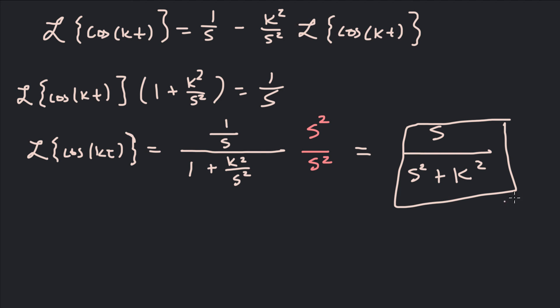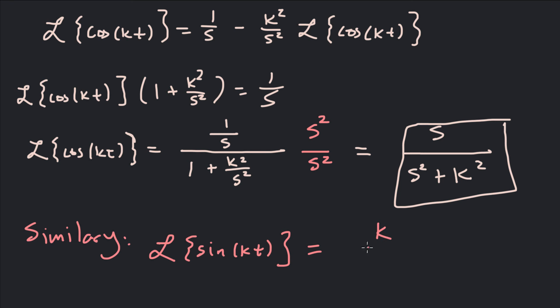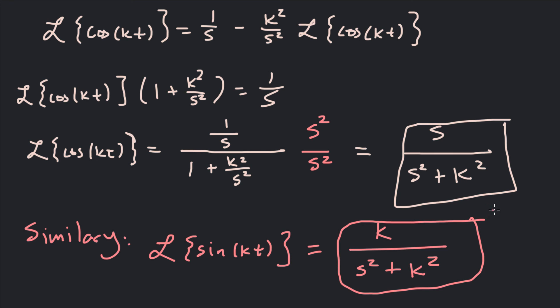So Laplace of cosine kt equals (1 over s) divided by (1 plus k squared over s squared). Multiplying top and bottom by s squared gives us s over (s squared plus k squared), and that is the Laplace transform of cosine kt — one you'll want to memorize. Similarly, Laplace of sine kt equals k over (s squared plus k squared). They're very similar: sine has the constant k on top, cosine has the variable s on top. That's how we find the Laplace transform of cosine kt using the definition.